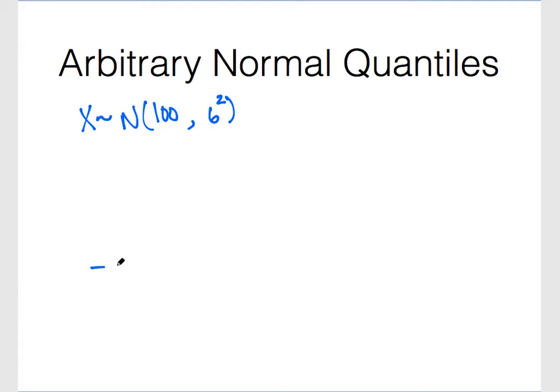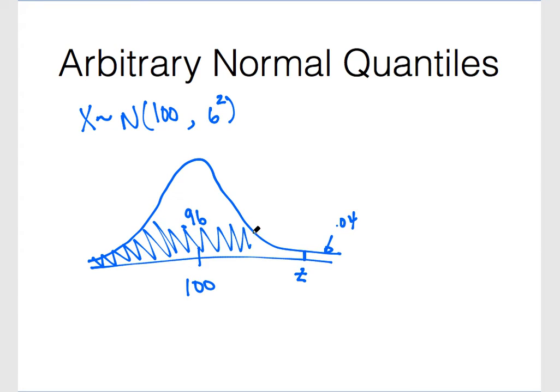And now, suppose that we're looking for the 96th quantile of this distribution. So we know that we're centered at 100, and the 96th quantile is the value of z that separates the lowest 0.96 of that distribution from the upper tail area of 0.04. But R only knows how to deal with these lower tail areas, so we're thinking about this 0.96.